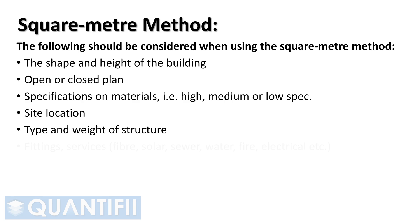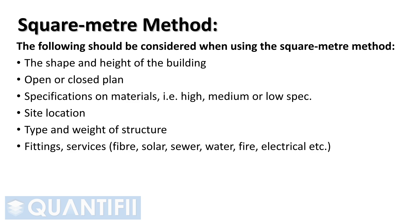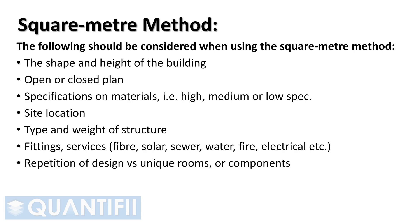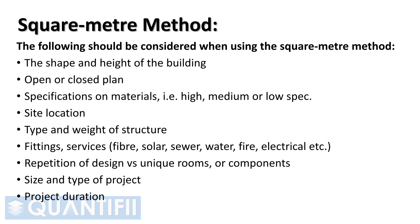Fittings and services — for example, fiber, solar, sewer, water, fire, electrical requirements, etc. Repetition of design versus unique rooms or components: in the instance of a hotel, if rooms are copied, this will be easier to estimate than a building design with varying rooms. Size and type of project. Resource costs increase over time, therefore longer projects need to take into account inflation of costs. When work is scarce, resources generally cost less, so local and market conditions should be considered.